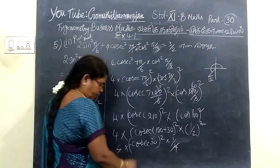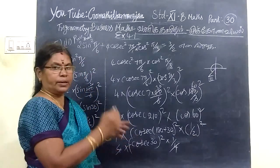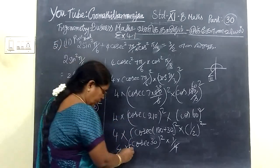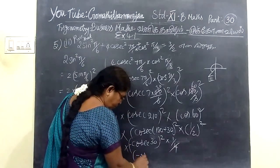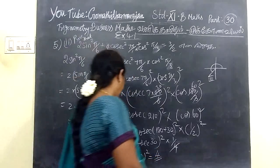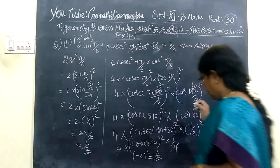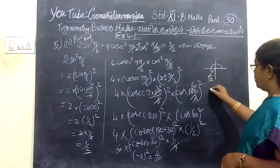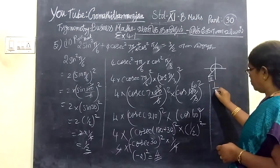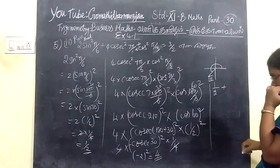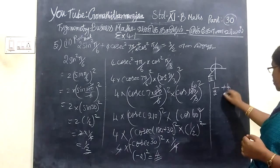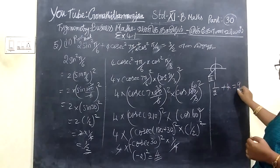So this becomes minus sign 30, which is 1 by 2. We square it: 1 by 4. Then 4 into 1 by 4, the 4 cancels. Then multiplied by 1 by 2, this gives 1 by 2. So adding both parts: 1/2 plus 1/2.